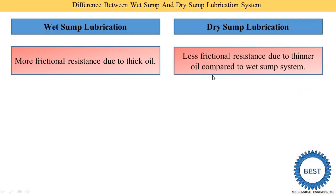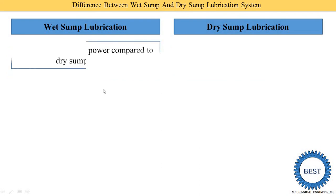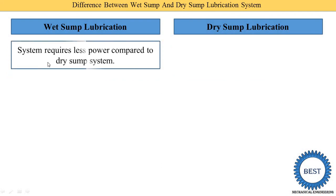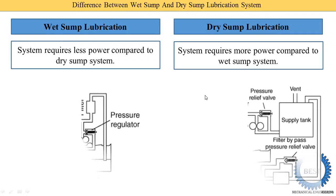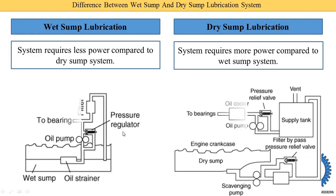Due to thicker oil, the wet sump system has more frictional resistance. In contrast, the dry sump system has less frictional resistance due to the thinner oil. Regarding power consumption, the wet sump system requires less power compared to the dry sump system, because only one pump is used in the wet sump system.